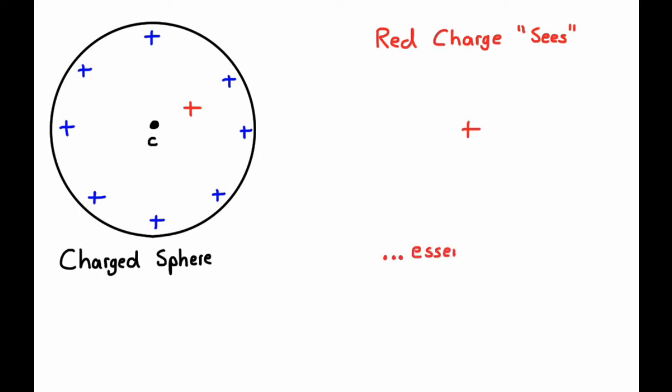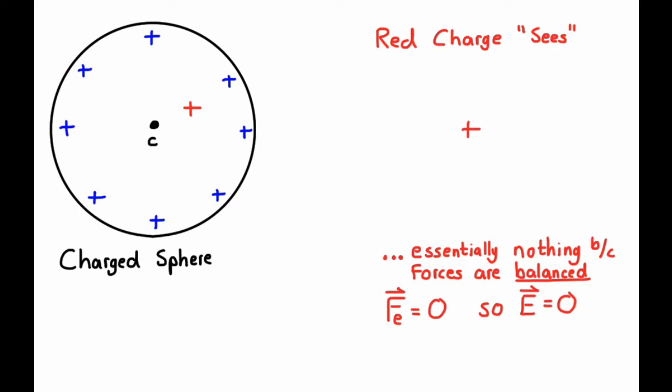And so, if I were to ask, what are the forces on that thing? There would be no forces. The charges to the right, to the left, above, below, in front, behind are all balanced, and so that red charge is essentially just there, nothing is surrounding it. So the electric force on it would be zero, so the electric field would be zero.